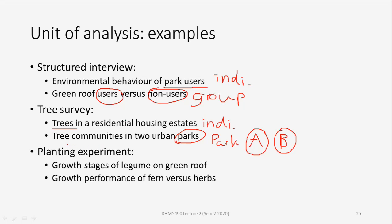Finally, if you are going to conduct a planting experiment, you can use the concept of individual and group as well. For example, if you want to quantify or observe the growth stages of a legume on green roofs, you will plant a lot of beans or peanuts on green roofs. Each plant will be viewed as an individual, and later these individuals may be used for data analysis like correlation test or regression.